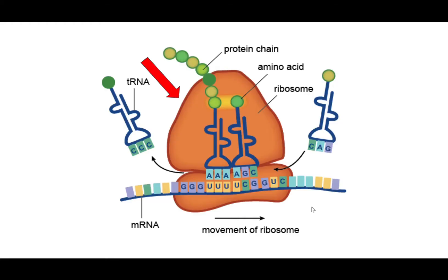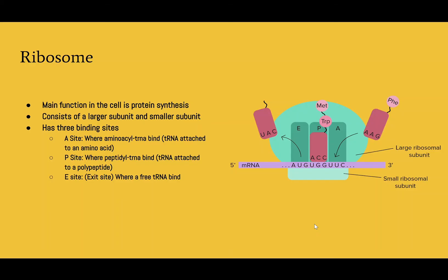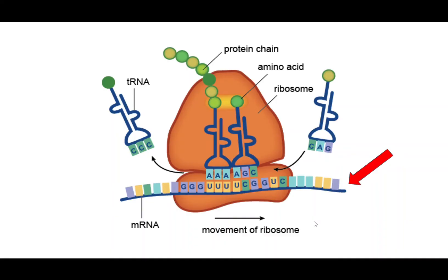This is a diagram of translation, and specifically the arrow is pointing to the ribosome. Protein synthesis takes place in the ribosome. It has three binding sites: an A site where aminoacyl tRNA bind, a P site where peptidyl tRNA bind, and an E site where free tRNA bind.